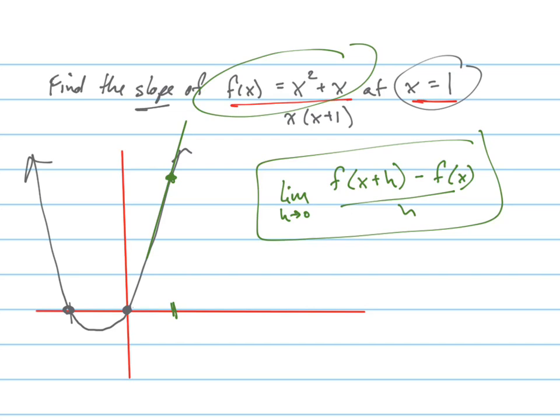We're taking two points, and we're finding the slope of that line connecting those points, and then we're making those—oops, sorry, I shouldn't have put the points there. The points are on either side of this point right here. And then we're getting closer to that point. That's what we're doing.